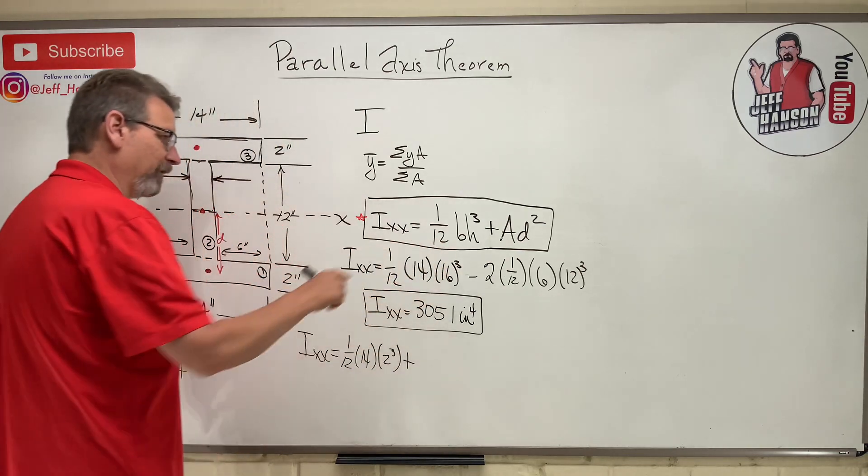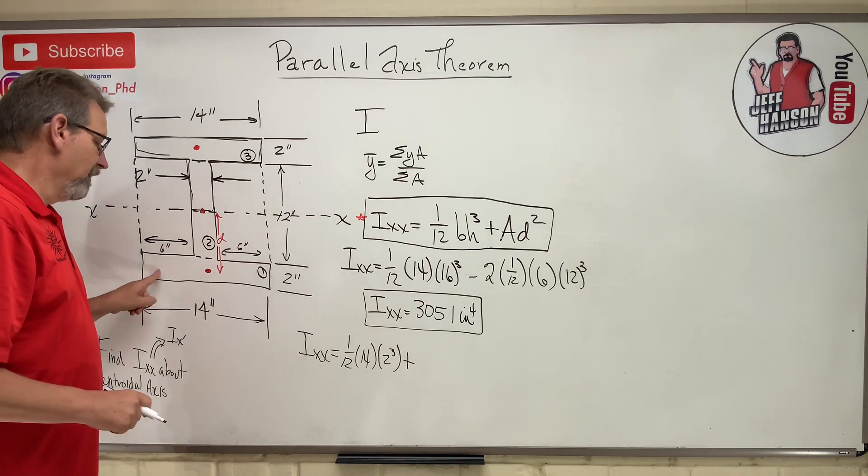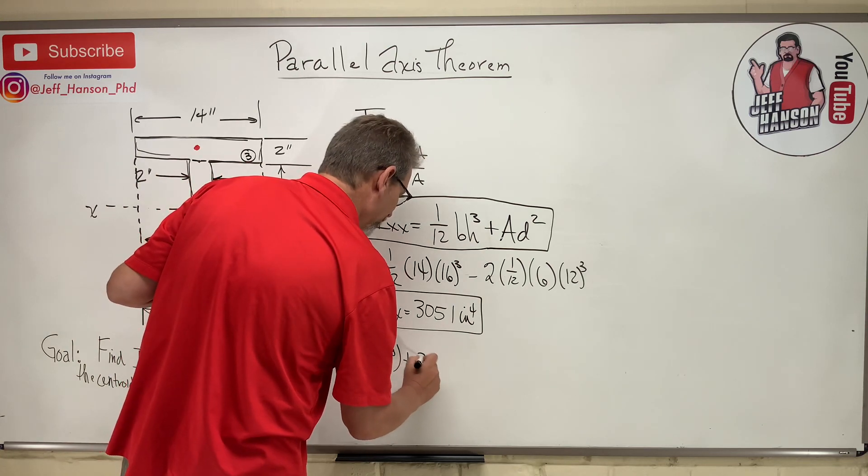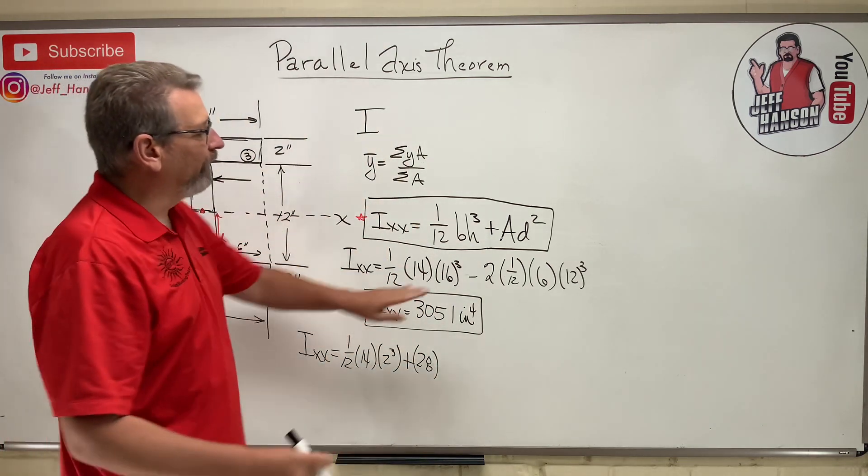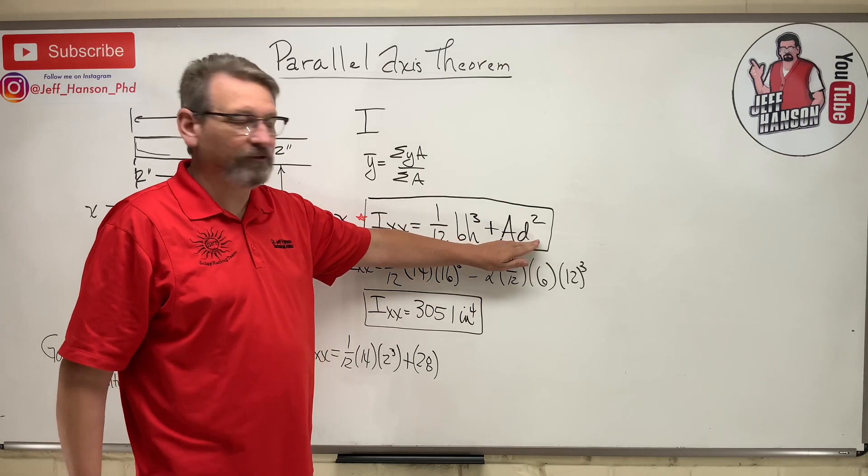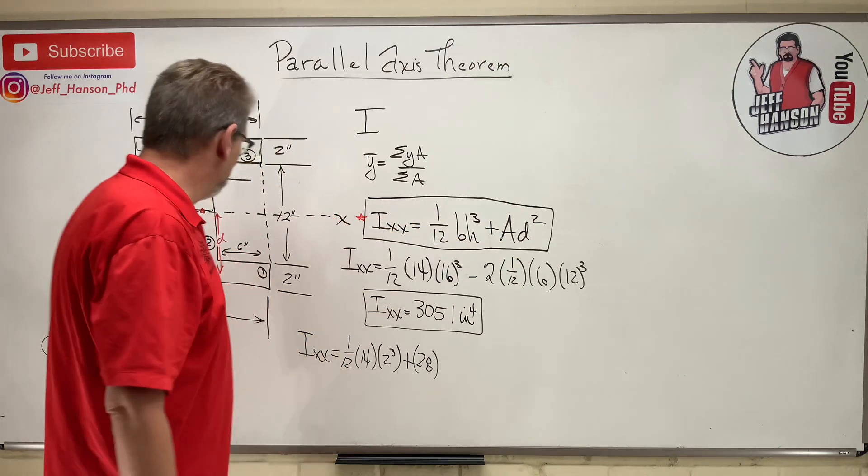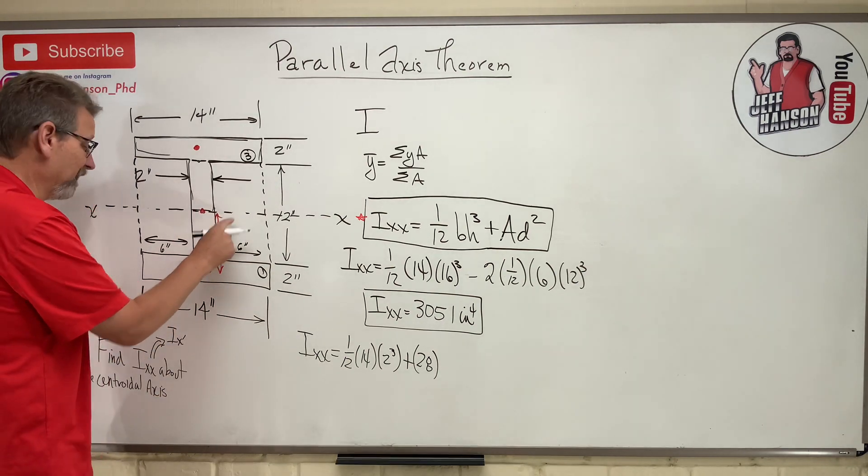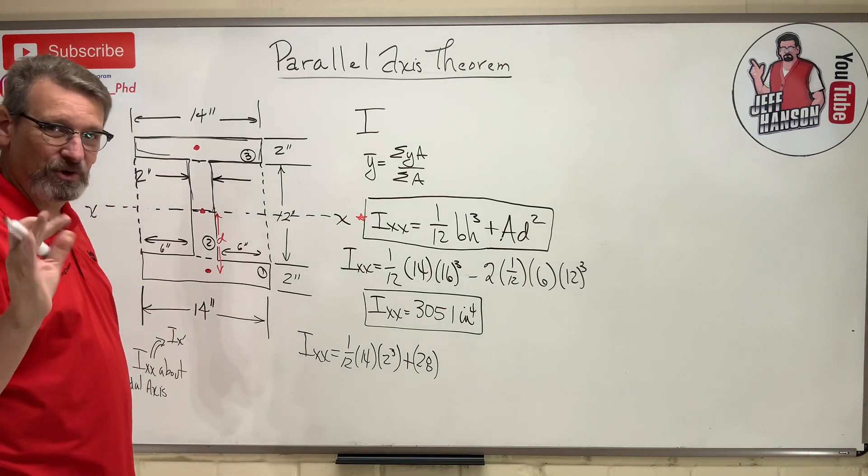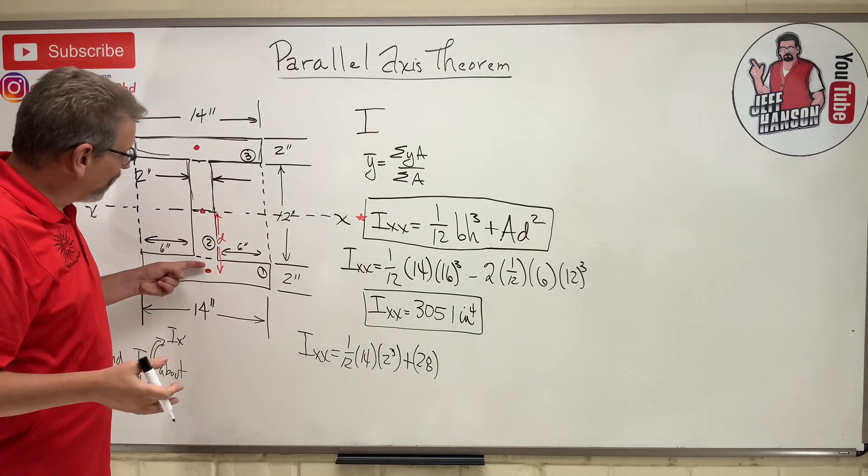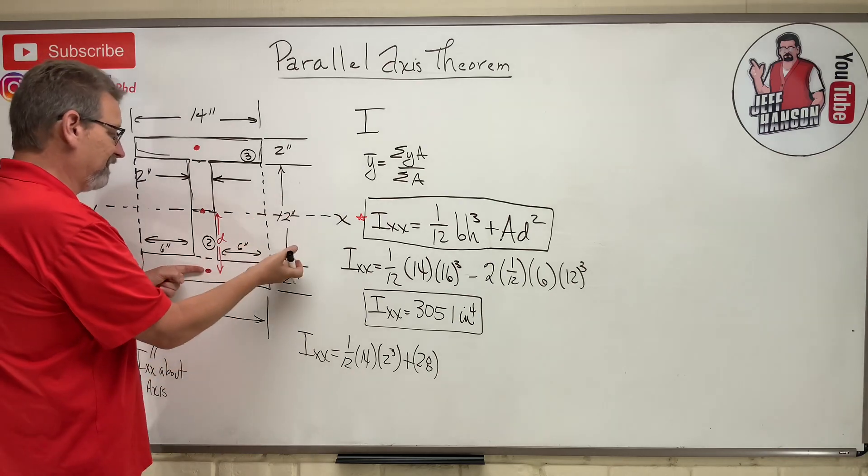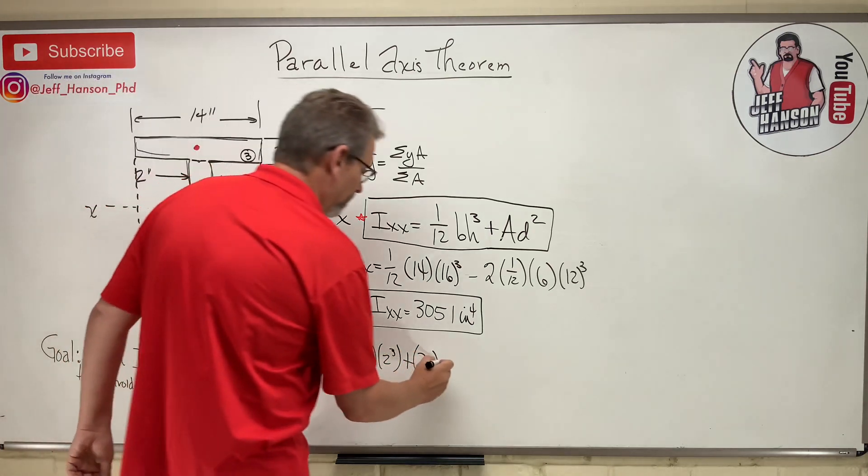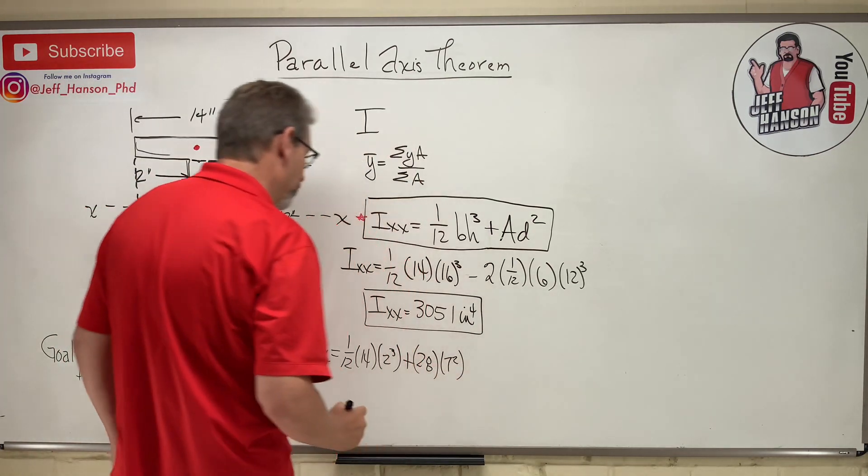Plus, all right, here we go with our transform, parallel axis theorem, ad squared. Fourteen times two is 28. That's the area. And then what is d? This is where the wheels usually fall off for students is like, I don't know what to use for d. D is right here. It's simply the distance from the neutral axis of the whole part to the centroid of the piece part that you're doing. That's all it is. So out to this piece part is how far away? That's six plus another half of two, which is one. Six plus one is seven. Boom.